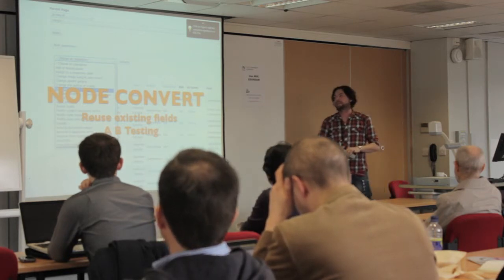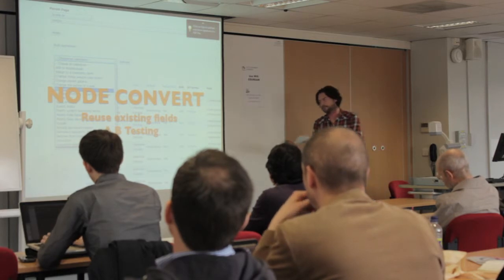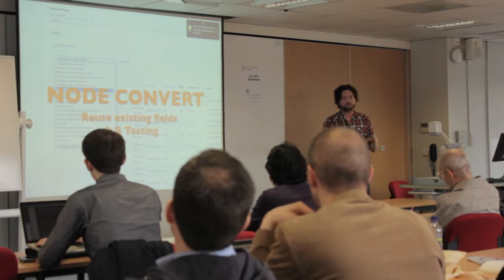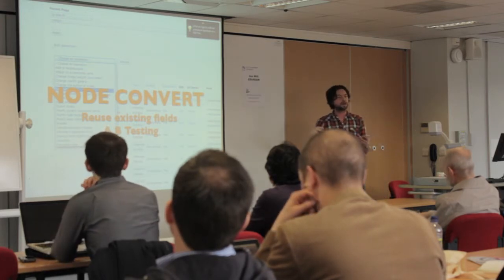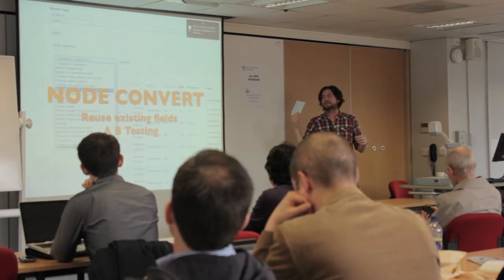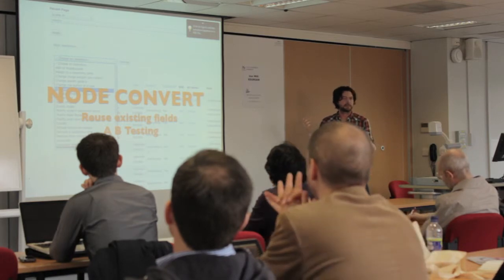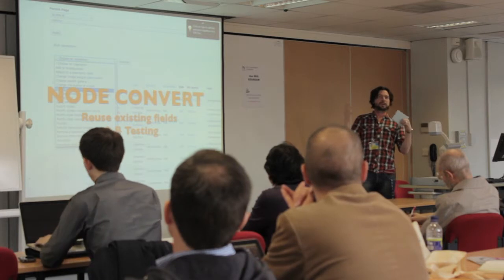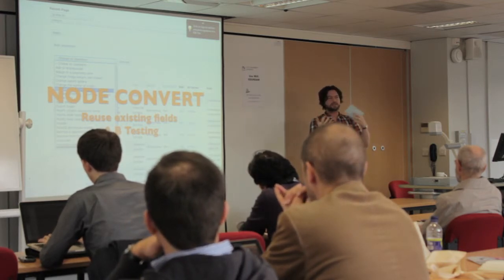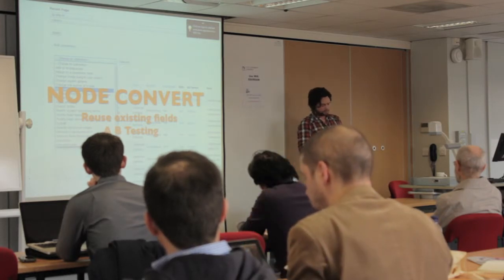Another module I use a lot in prototyping is Node Convert. It takes one piece of content from one content type and converts it into another. Using the event example, you might have date-driven content pieces in your prototype - you could convert all your existing event nodes to your new event type. The good thing about Node Convert is you could convert just half of them, enabling A/B testing with two different event content types on the same site, so you can see the differences and show the designer: option A or option B?